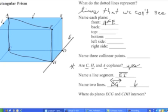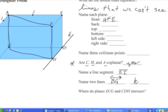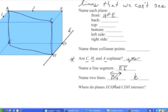Finally, it asks where planes EGC and CDH intersect. Plane EGC is the left side of the box, and plane CDH is the bottom. Where does the left side intersect the bottom?